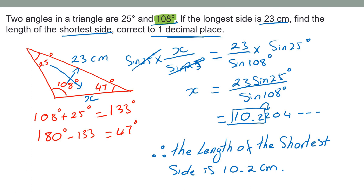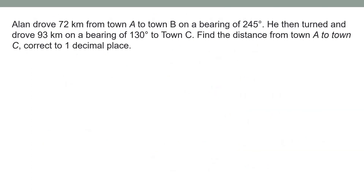Next question: Ireland drove 72 kilometers from town A to town B on a bearing of 245 degrees. He then turned and drove 93 kilometers on a bearing of 130 degrees to town C. Find the distance from town A to town C correct to one decimal place. If you are not familiar with bearings, please watch my videos on compass and bearings. Starting from A to B on bearing 245 degrees.